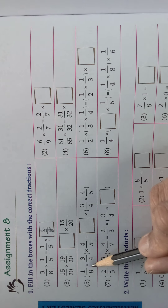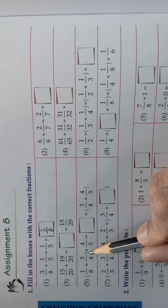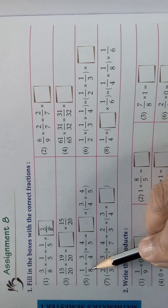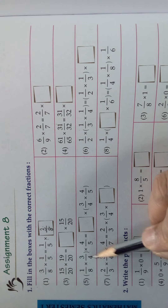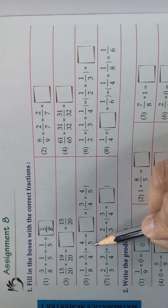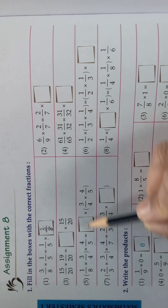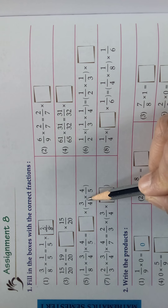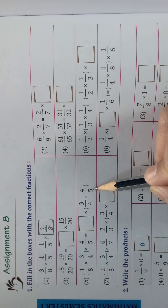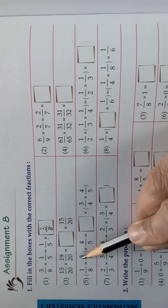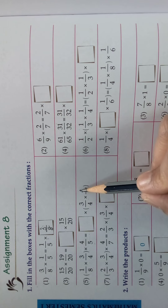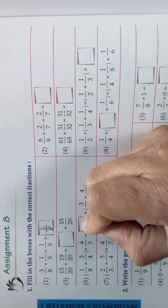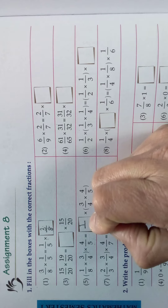Now we will do the fifth one. This is the group property. Look here: 1/8 × 3/4 × 4/5 is equal to 3/4 × [dash] × 4/5. So 3/4 is there, 4/5 is there, but 1/8 is missing — so you write that missing number.